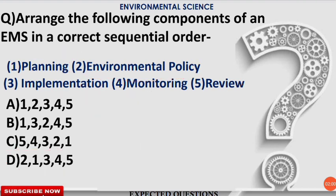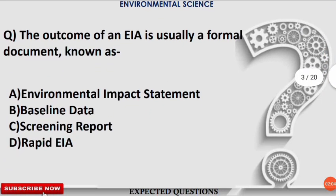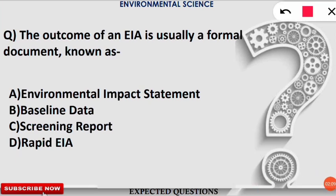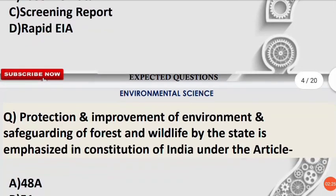The next question: the outcome of an EIA (Environmental Impact Assessment) is usually a formal document known as what? The correct option is A — the document is known as the Environmental Impact Statement. Note this down as it will be very helpful for exam preparation.